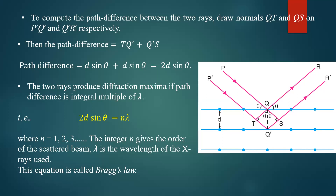In the previous class we discussed the derivation of Bragg's law, which gives the equation 2d sinθ = nλ, based on X-ray diffraction. When X-rays fall on crystal planes they get reflected. In this expression, d is the interplanar spacing, θ is the glancing angle, n is the order of diffraction, and λ is the wavelength of the X-ray incident on the crystal. This expression is very useful for finding the interplanar spacing — the distance between one crystal plane and the consecutive crystal plane.